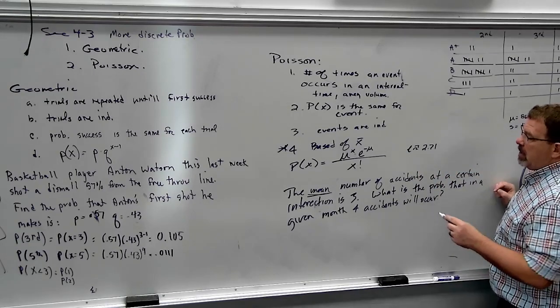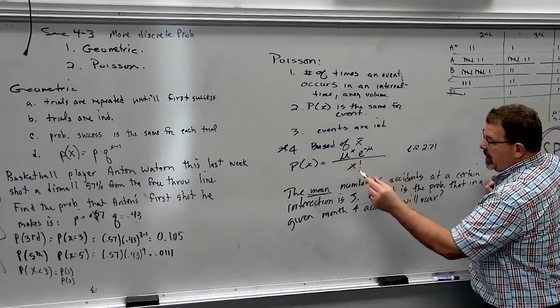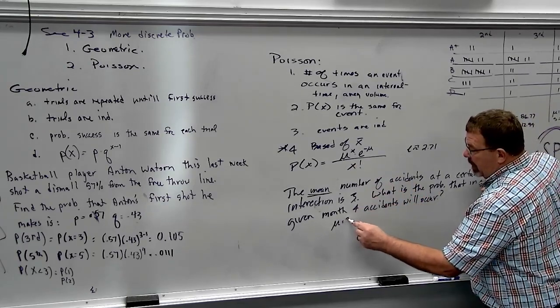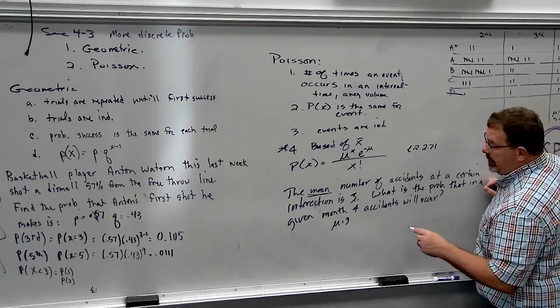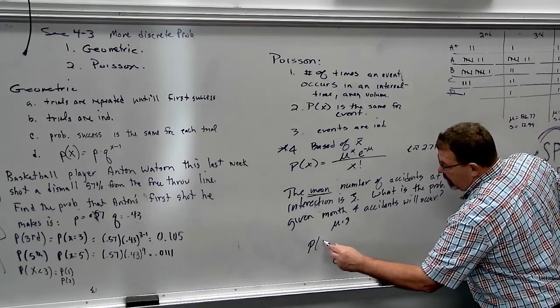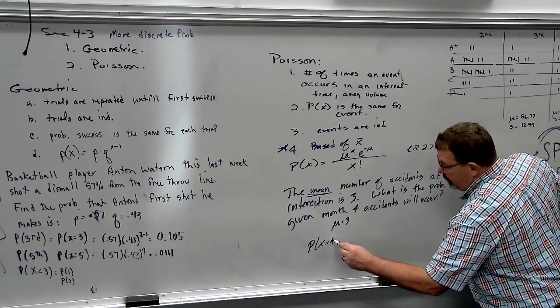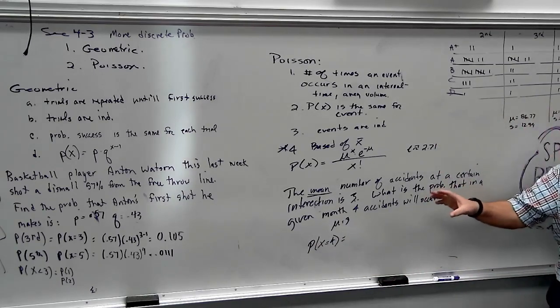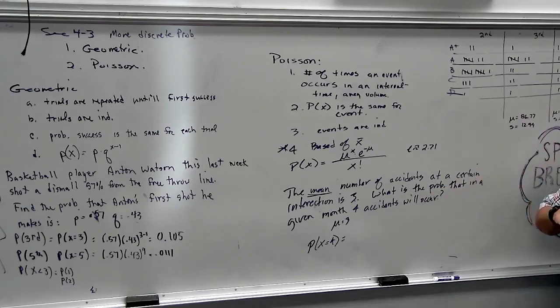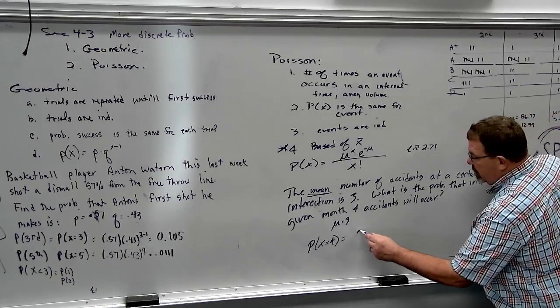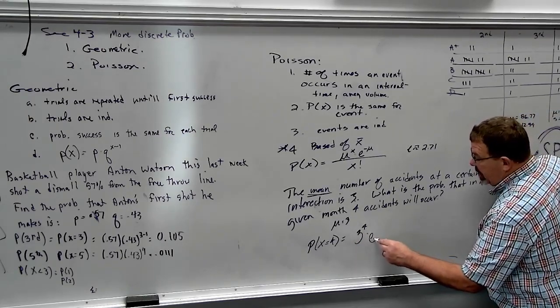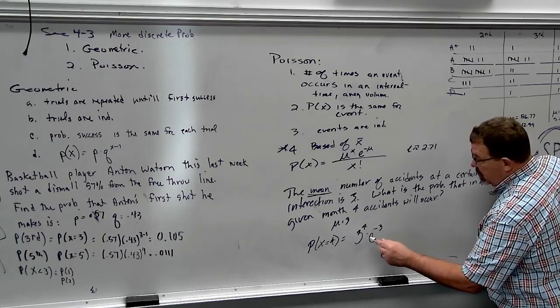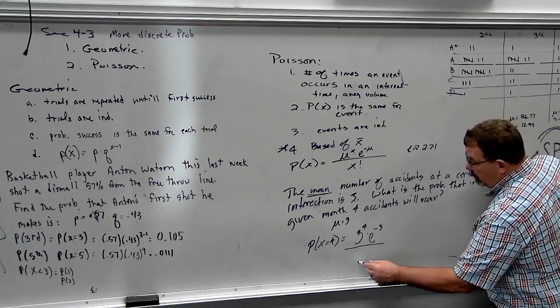Let's label what we know real quick. So, we know that the average is 3. There are 3 accidents a month at this intersection. E is just E. We don't have to worry about that. And I'm asking you to find the probability that there is exactly 4 at this intersection. Again, I want you to always list that. Exactly 4. X equals 4. Let's go to work.